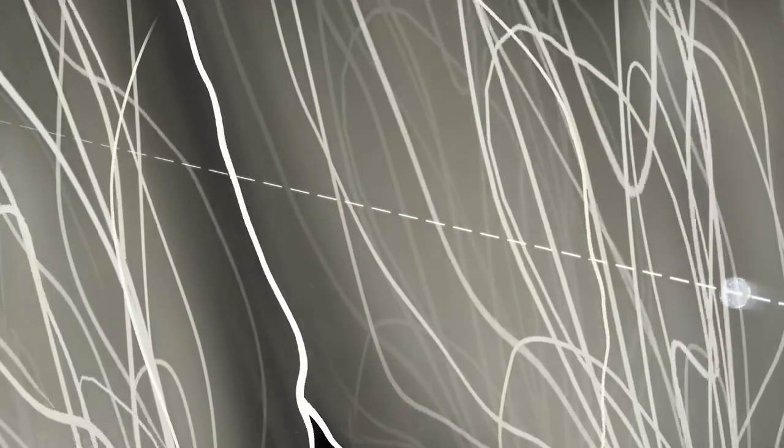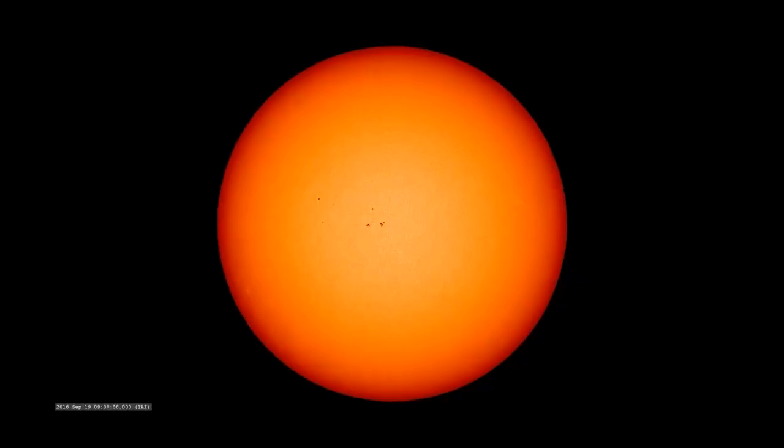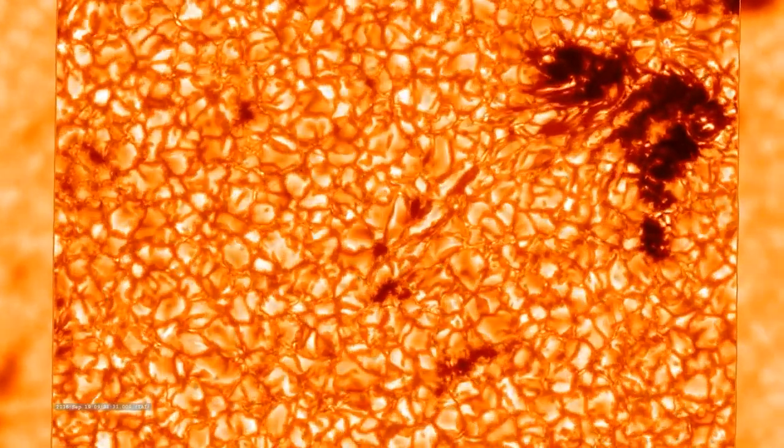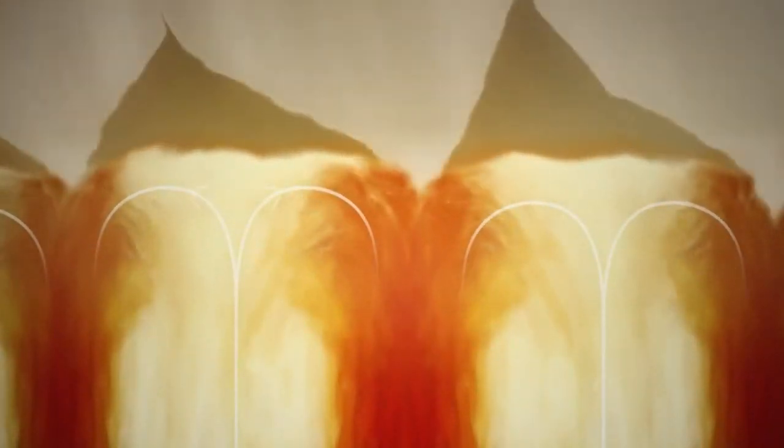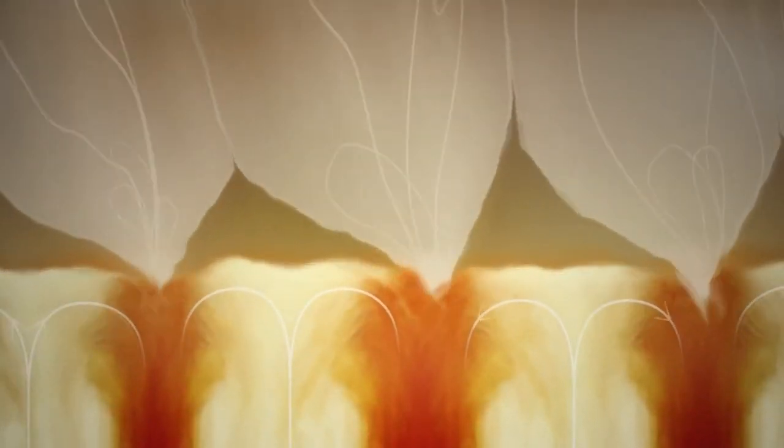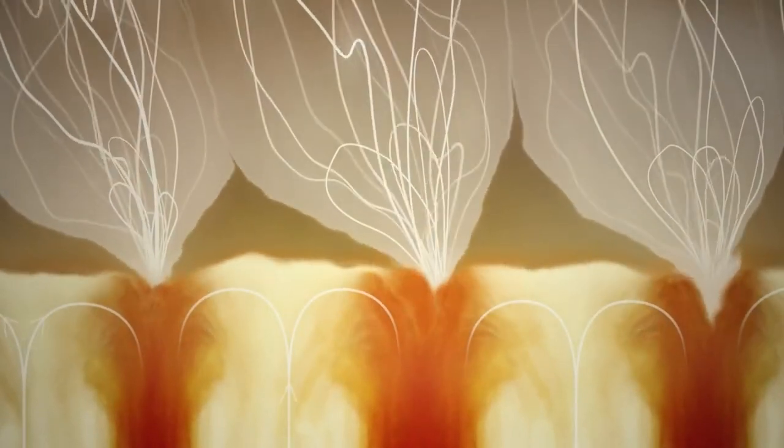As Parker got even closer to the sun, it detected bursts of switchbacks. Scientists trace these bursts all the way to the visible surface of the sun. Here we see distinct cells. As heat rises beneath, these convection cells churn and create funnels of magnetic energy above the surface. Scientists found that switchbacks form inside these funnels before rising into the corona and beyond.